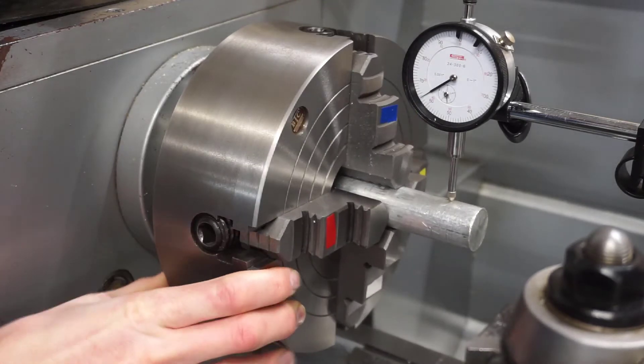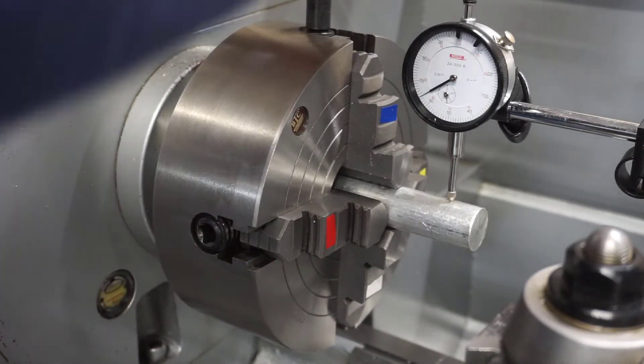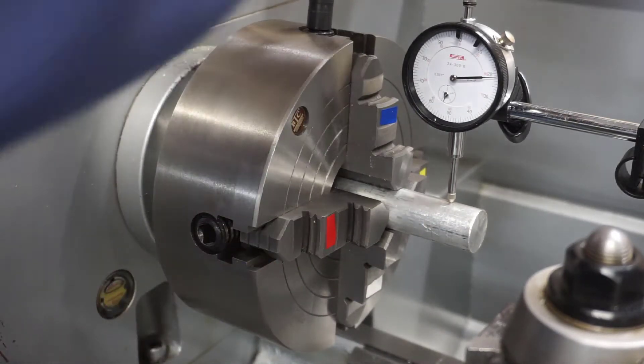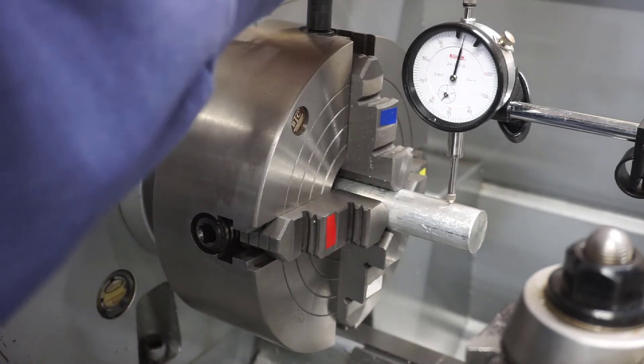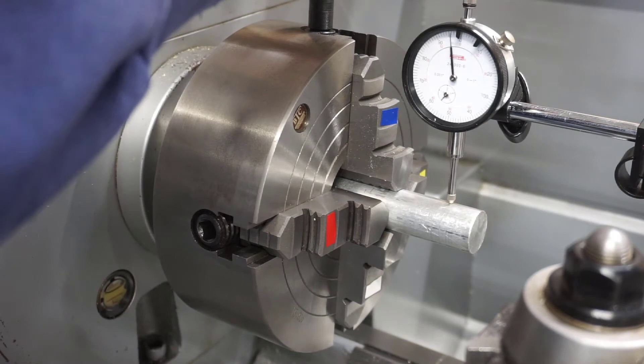If you want to move the part, you loosen one set of jaws, in this instance the white, and we tighten the blue. And you'll see the dial indicator come down. And we took out about a hundred thousandths of runout on that one maneuver.